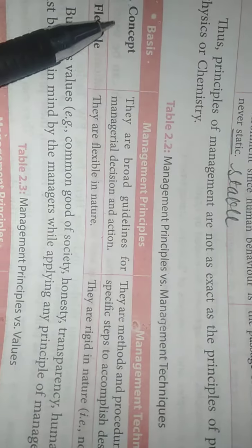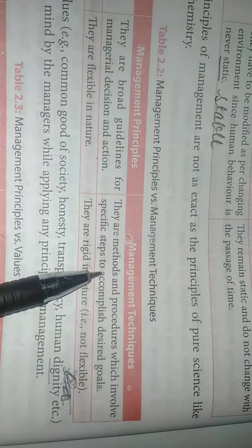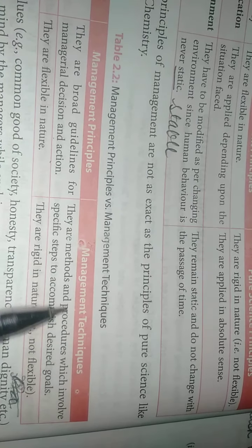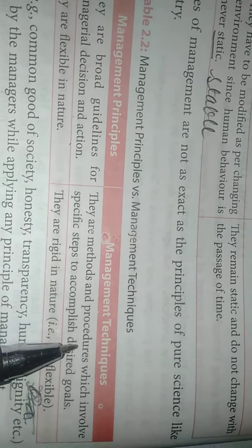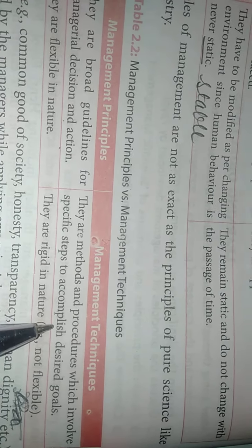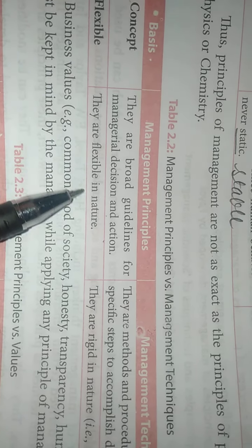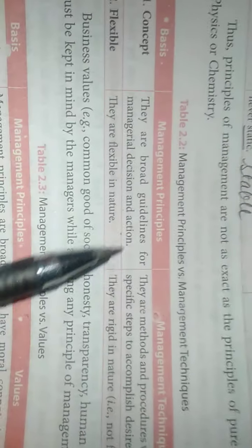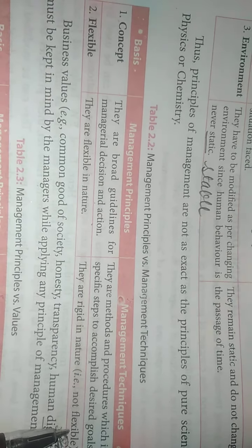The difference: management principles are the broad guidelines for managerial decision and action. Management techniques are the methods and procedures — like fitting car wheels in 3 minutes or 5-minute tea breaks — which involve specific steps to accomplish desired goals. Management principles are flexible in nature, depending on the situation faced, while management techniques are rigid in nature — always fixed and not flexible.